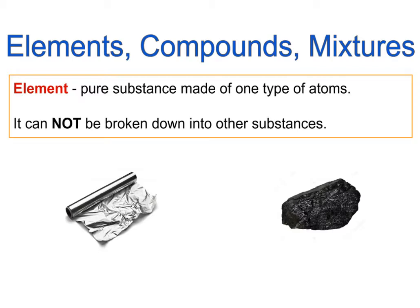For example, if I take a piece of aluminum foil, I would be holding in my hand an element, because that aluminum foil is made out of only atoms of aluminum — it's just a huge bunch of atoms of aluminum stuck together, represented as aluminum foil. Or if I take a piece of coal, the coal is made out of a bunch of carbon atoms stuck together.